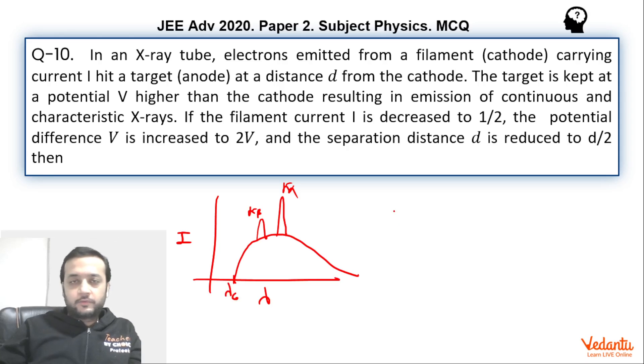If you want to recollect that lambda cutoff is nothing but hc upon eV, where eV is the energy of the highest or the fastest moving electron or the most energetic electron.